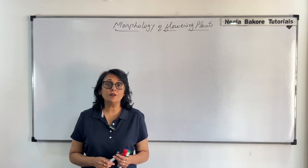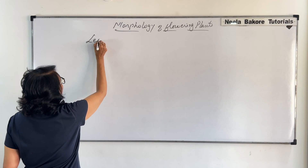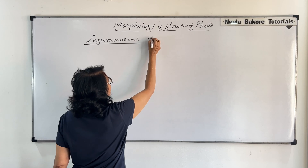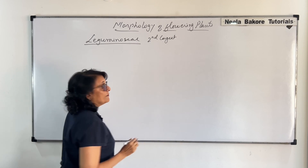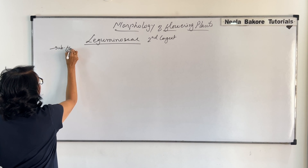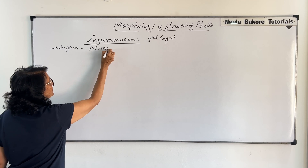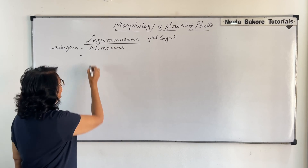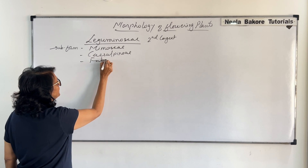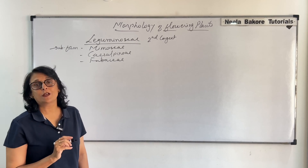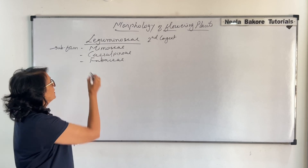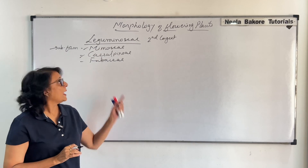We are going to start with the Leguminaceae family, which is the second largest family. We have to talk about three sub-families included under this: Mimosae, Caesalpiniae, and Fabaceae. The first two sub-families are sometimes referred to as families, but they are actually sub-families. We will discuss Mimosae and Caesalpiniae in short, and Fabaceae in detail.